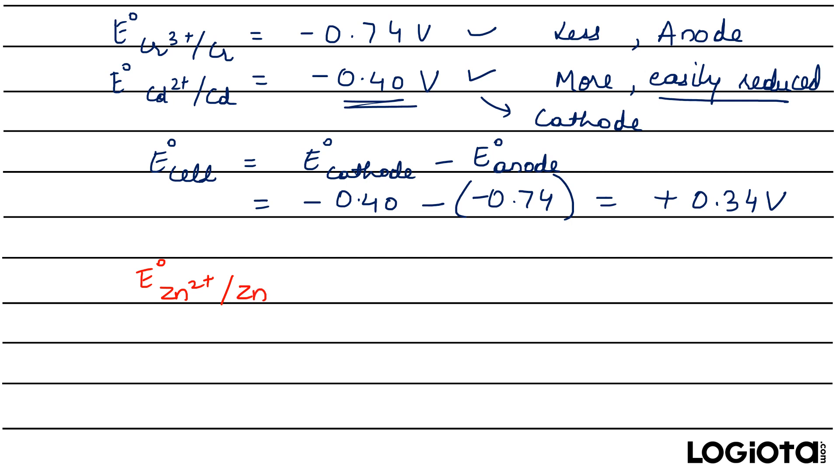Now let's see another example. Here the reduction potential of zinc is given, Zn²⁺ to Zn is -0.76 volts and another reduction potential which is given is for copper which is 0.34.